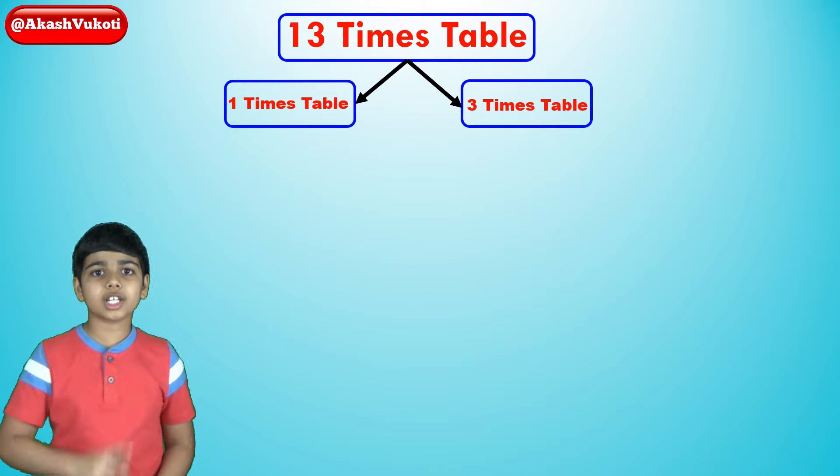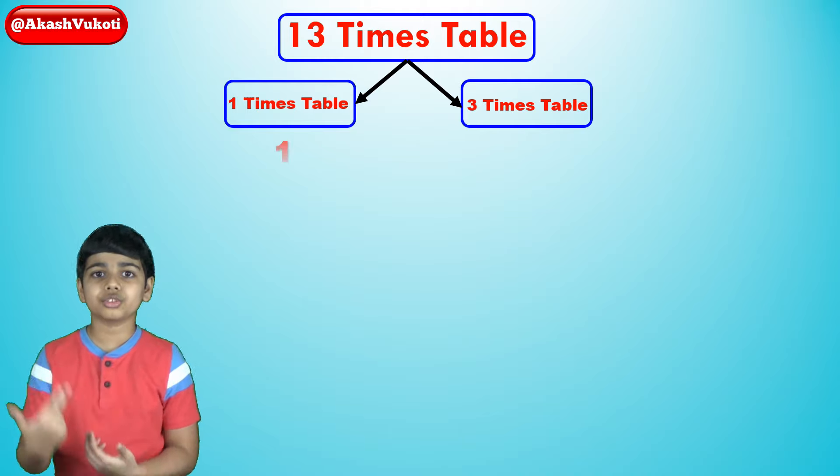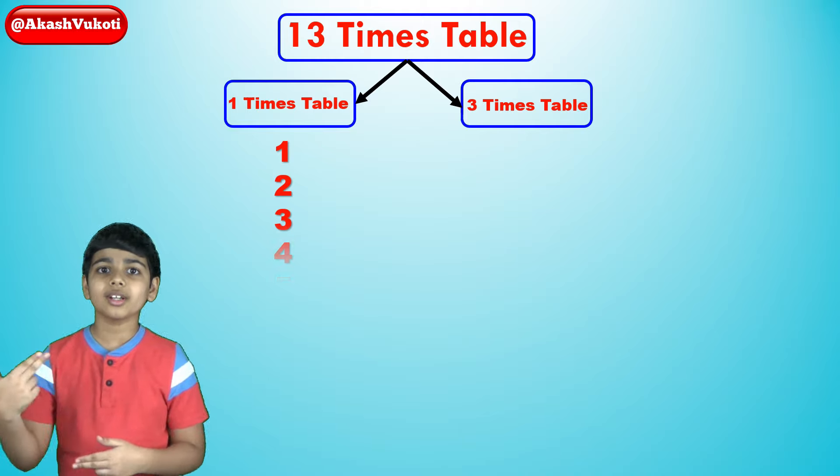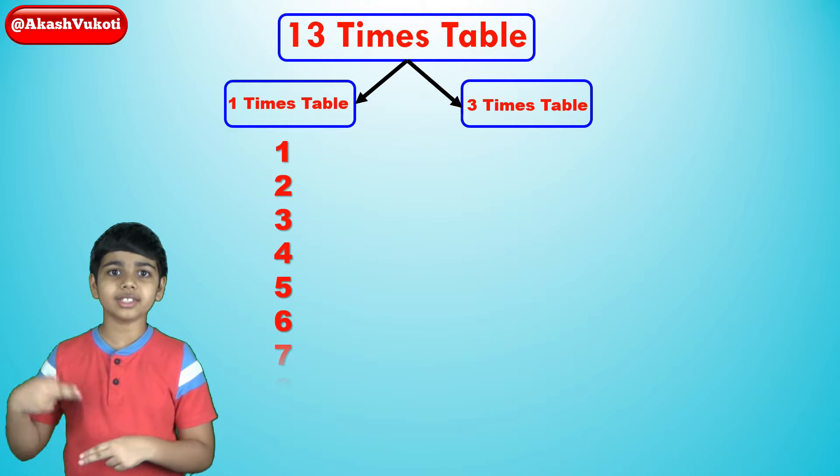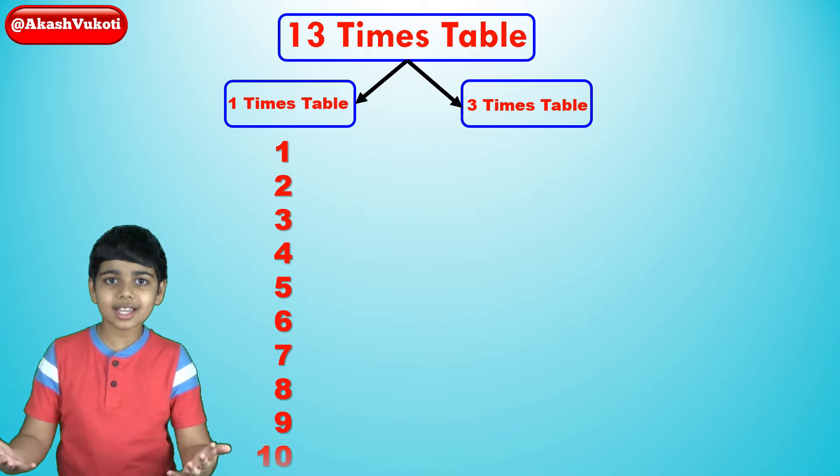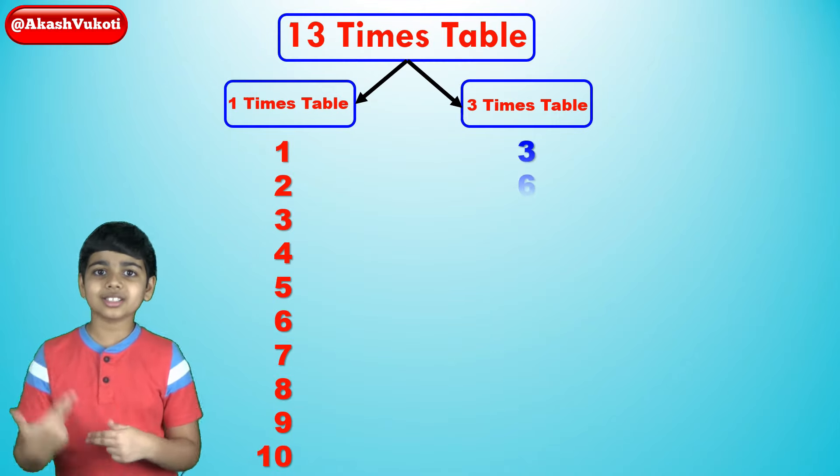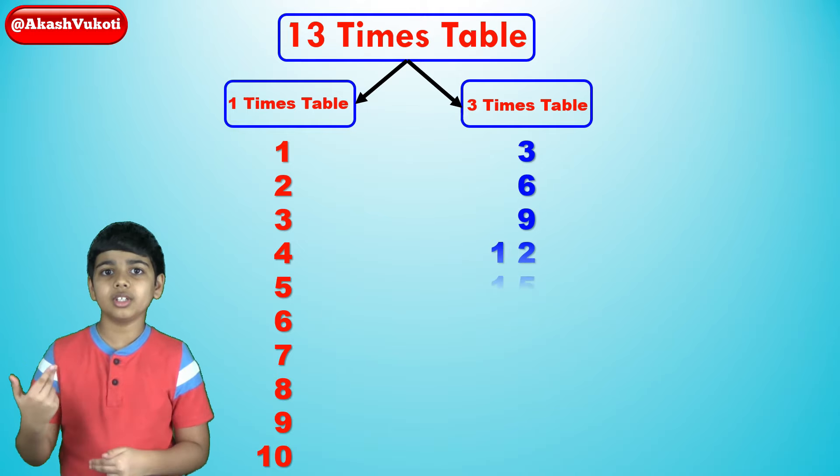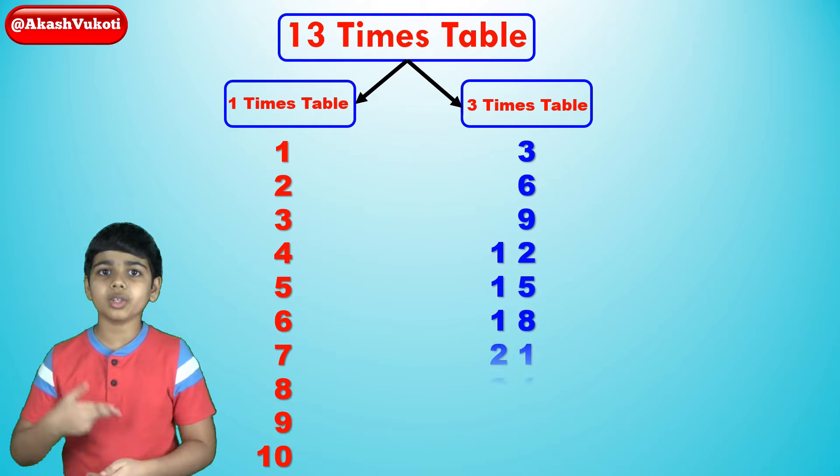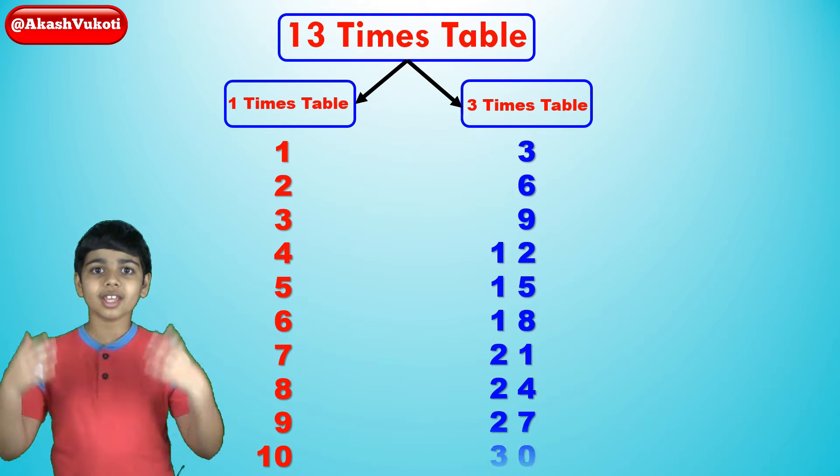So, the 1x table is just 1, 2, 3, 4, 5, 6, 7, 8, 9, 10. And then the 3x table is 3, 6, 9, 12, 15, 18, 21, 24, 27, and 30.